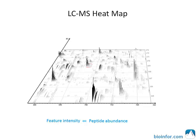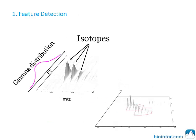The abundance ratio of a peptide between two samples can be estimated by the intensity ratio of the peptide feature in two heat maps. There are several steps to determine the relative abundance of a peptide and protein by label-free quantification.